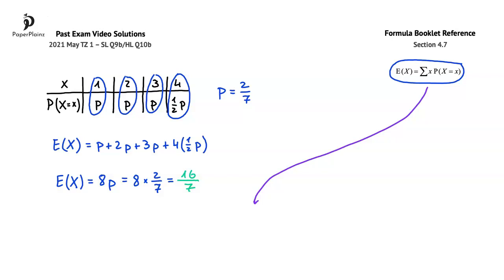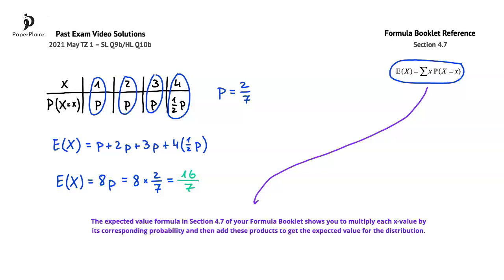To make this formula more clear, let's translate it from mathematical language into the English language. One way to do this is to say that this formula shows you to multiply each x value by its corresponding probability, and then add these products to get the expected value for the distribution.